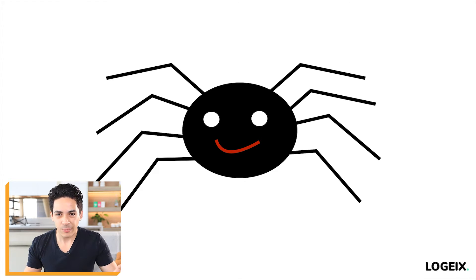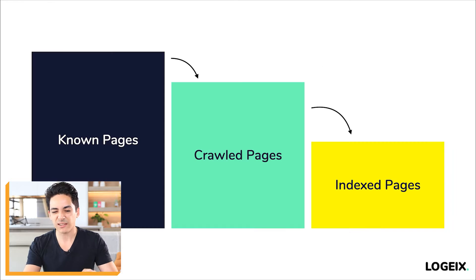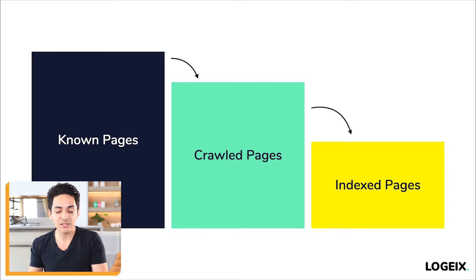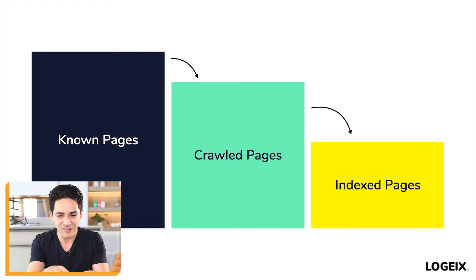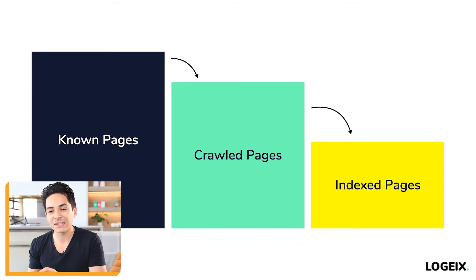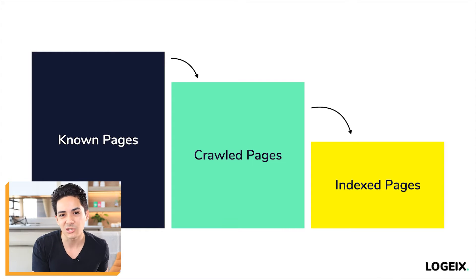Once it has identified all these different pages, it separates them into three different categories. There are going to be known pages — pages they know exist. There are going to be crawled pages — pages they've actually sent the spider into to collect all the information, code, and content on that page. And then there are indexed pages, which is out of those crawled pages, which ones they decide to add to their search engine.